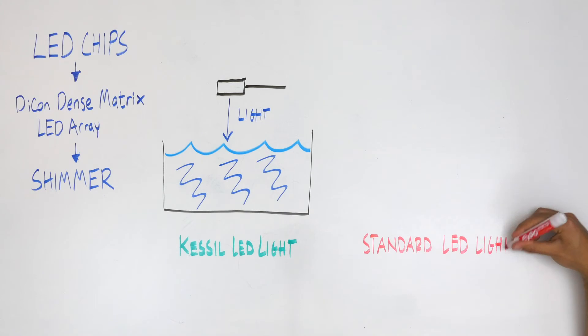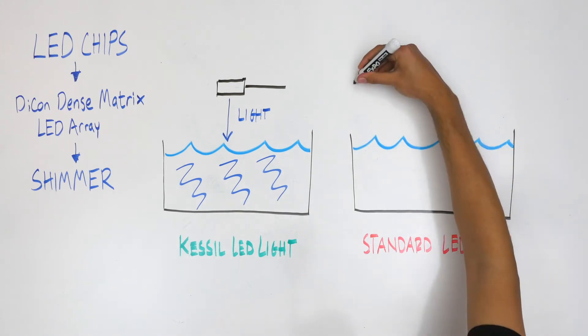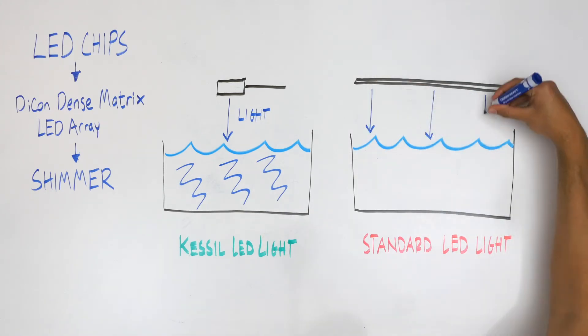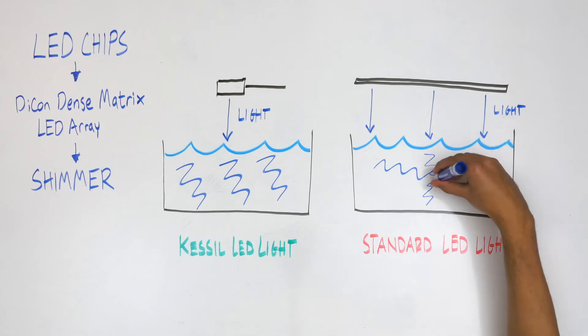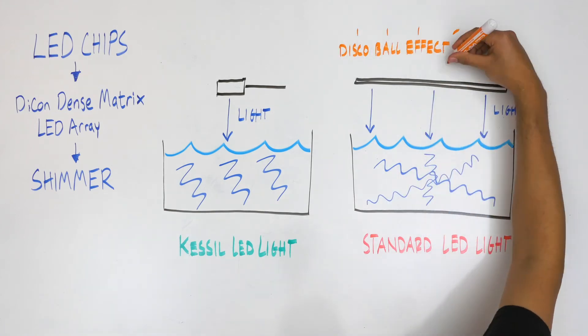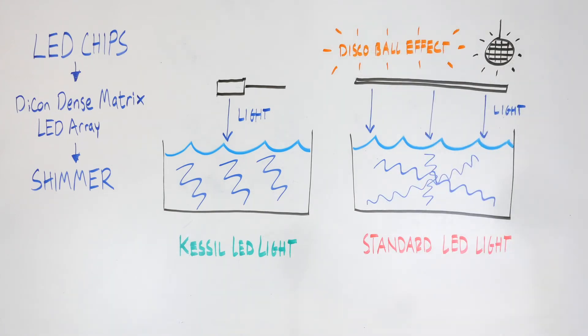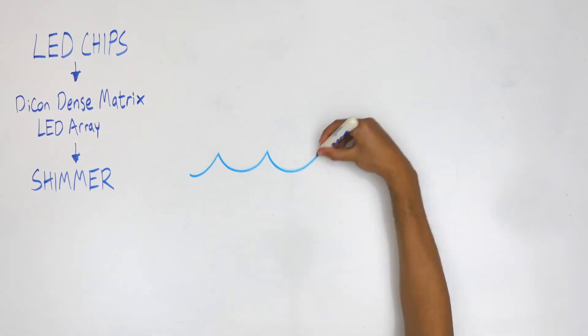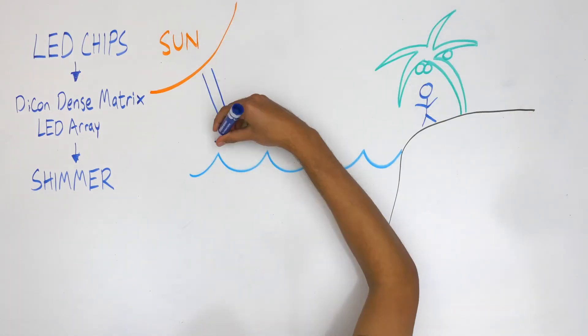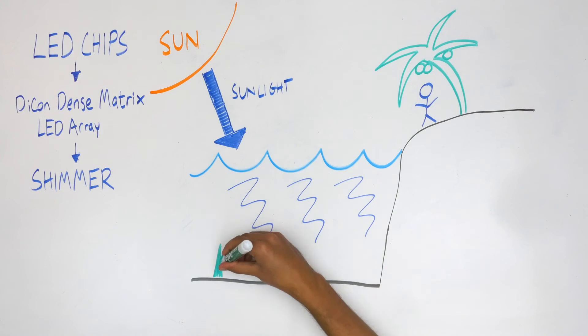Standard LED lights, with many sources, struggle to achieve the same look, as each different light source interacts independently with the water surface. This is called the disco ball effect. The result in Kessel lights is a uniform, natural shimmer, just like you'd find in coral reefs in the ocean.